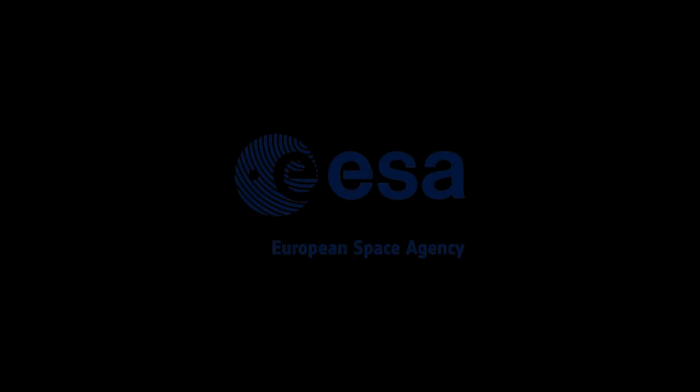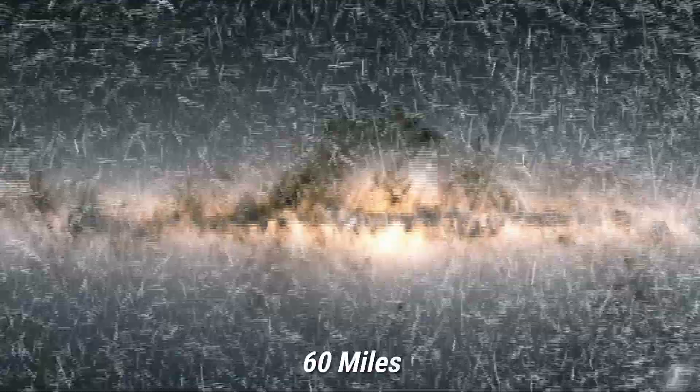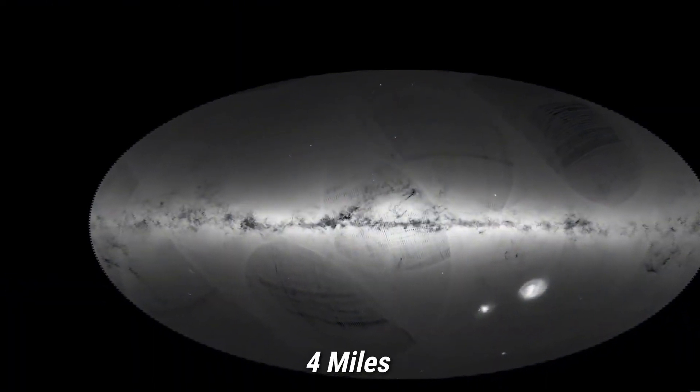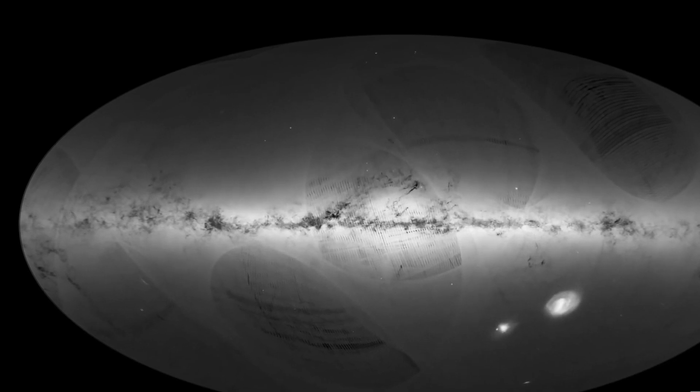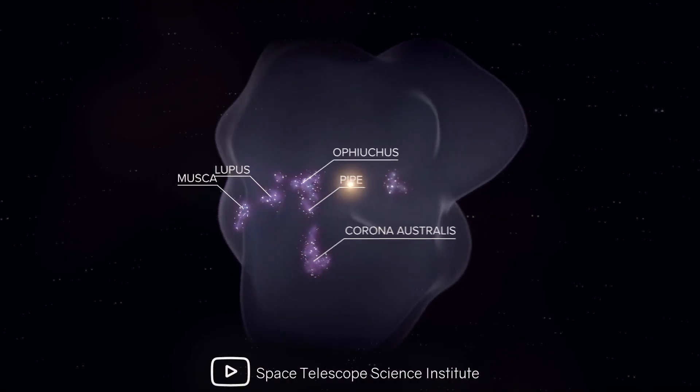According to data acquired by the European Space Agency's Gaia Space Observatory, the bubble was expanding at around 60 miles per second when it initially appeared. The bubble is still expanding at a rate of 4 miles per second. Seven star formation zones, dense molecular clouds where stars form, were discovered on its surface.